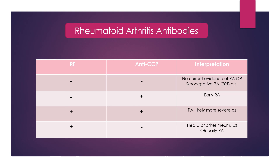If both of them are positive, that's the most definitive picture of RA, and the patient is more likely to have severe disease because of the anti-CCP. In the fourth scenario, the rheumatoid factor could have appeared first with anti-CCP still negative — that could be early disease. Or, because rheumatoid factor is not as specific for rheumatoid arthritis, it could indicate some other disease like hep C or another rheumatological disease.